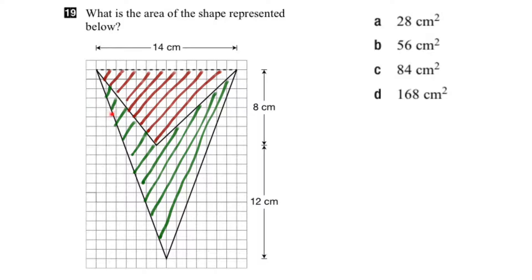So together, this green shape plus the red shape make up the large triangle here. Let's shade that large triangle in yellow. What we can say is the area of the green part will equal the area of the yellow part minus the area of the red part.